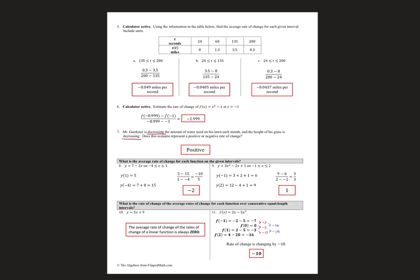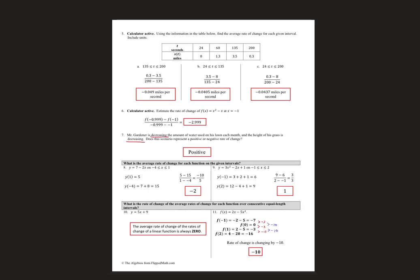Second page — calculator active again. You're finding the rate of change over a given interval. The calculator-active one has you estimating the rate of change at an individual point. Then the rest: is it a positive or negative rate of change? Average rate of change over a given interval — those you can just plug in.